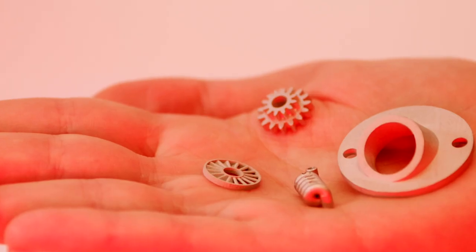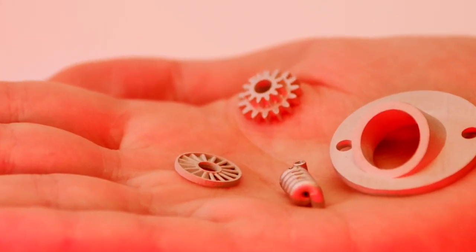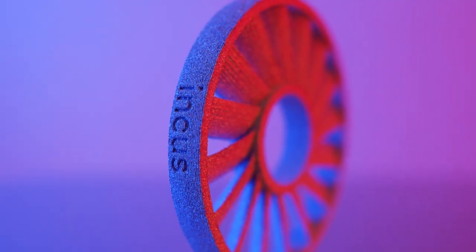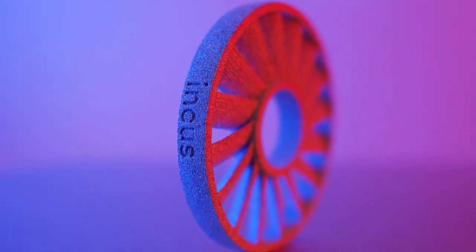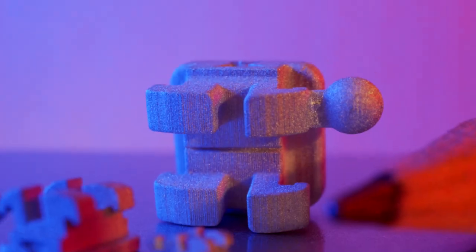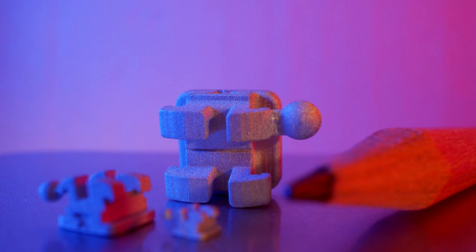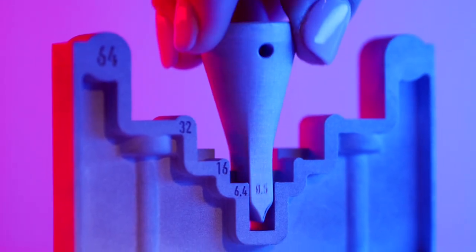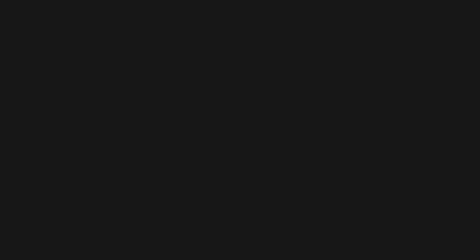The Incus technology can print complex geometries with superior surface aesthetics compared to other technologies. The printed parts have the same properties as those produced with metal injection molding, making it complementary to the MIM manufacturing process for prototyping and small to mid-scale production.